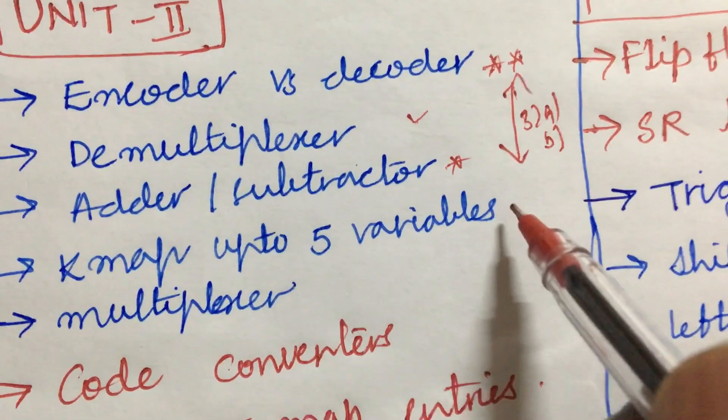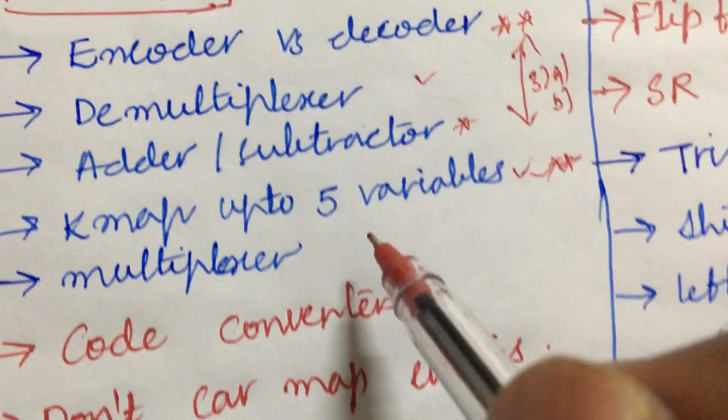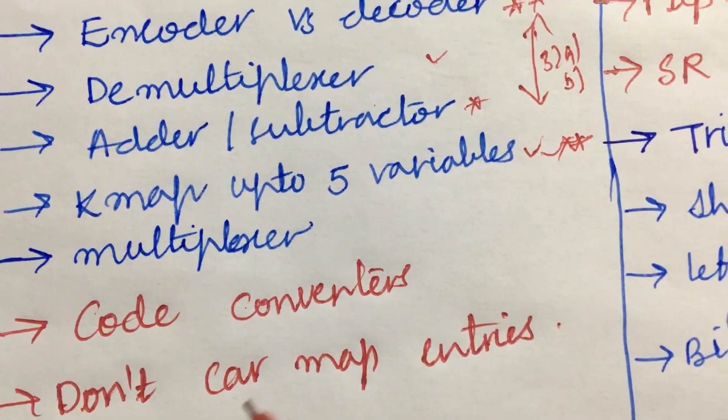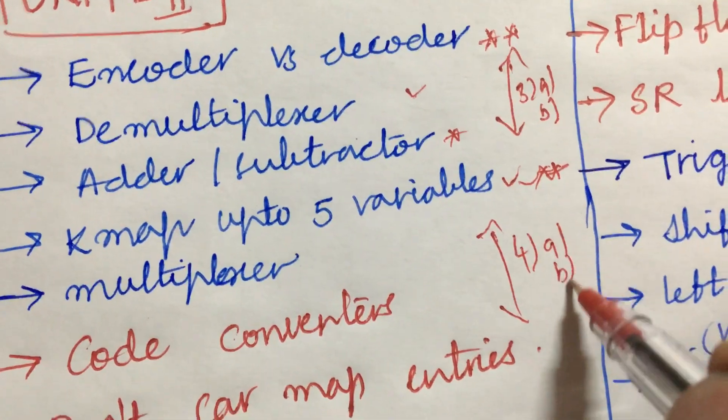And K-map up to 5 variables is said to be very important and gunshot question, and the multiplexer and the code converters and don't care map entries. From this part we can expect 4A as well as 4B.